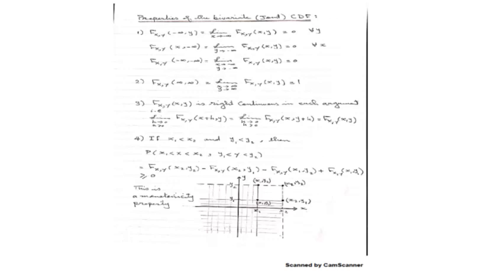We also discussed properties of the CDF. One of the properties in the univariate case was: if x goes to minus infinity, capital F of x goes to zero. Here we have two variables, X and Y. So now capital F of x, y will go to zero if at least one of the arguments goes to minus infinity. That means: F of (−∞, y) = 0 for all y.